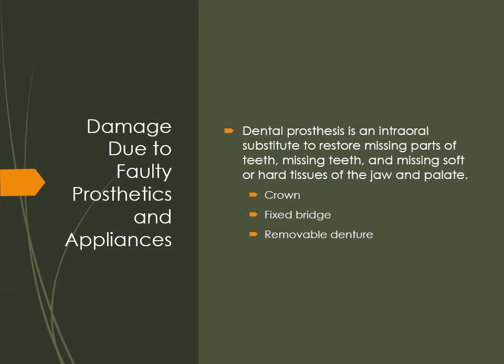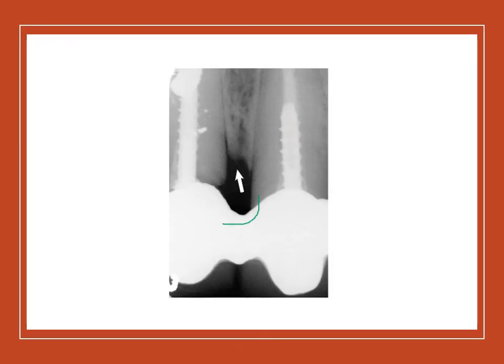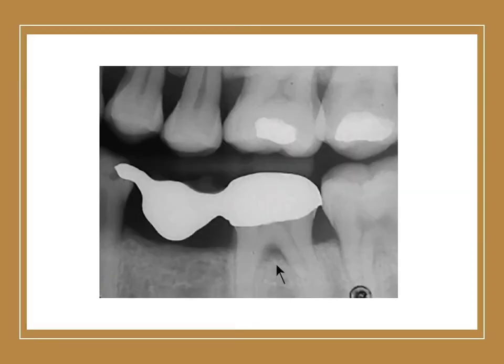Damage due to faulty prosthetics and appliances: a dental prosthesis is an intraoral substitute to restore missing teeth or parts of teeth and missing soft or hard tissues of the jaw and palate. These include crowns, bridges, and removable dentures. A poorly fitting removable prosthesis can impinge on gingival tissue, cause bone destruction, and favor plaque accumulation. Open margins on bridges incubate bacteria underneath, contributing to bone destruction, particularly visible in the furcation area.